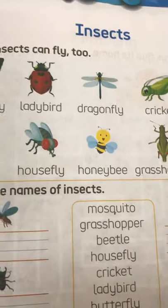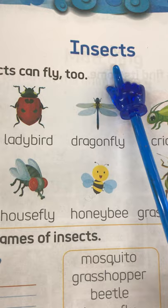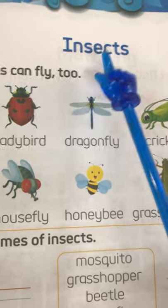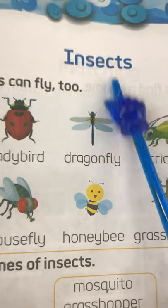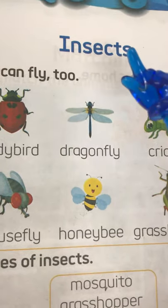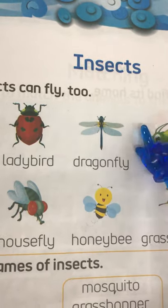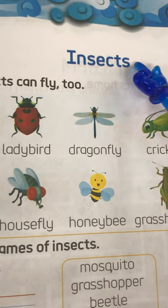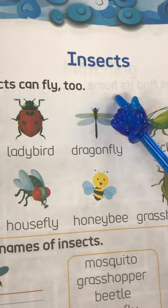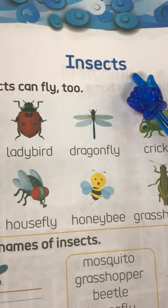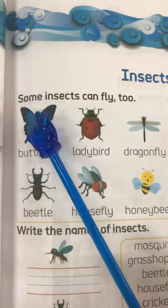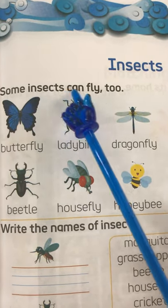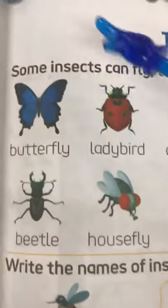Now we will begin our today's topic, insects. Let me tell you what insects are. An insect is a small animal. And do you know that an insect has six legs? And most of the insects will also have wings. So insects are small animals, they have six legs, and most of the insects will also have wings — and insects can fly too.